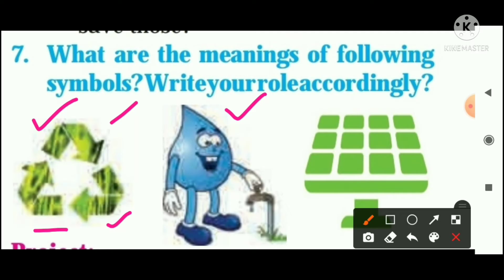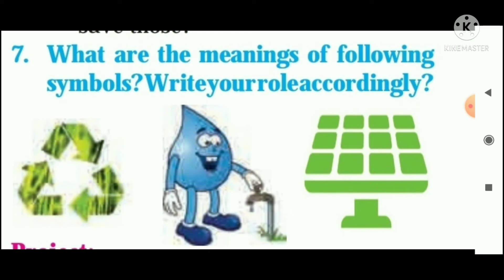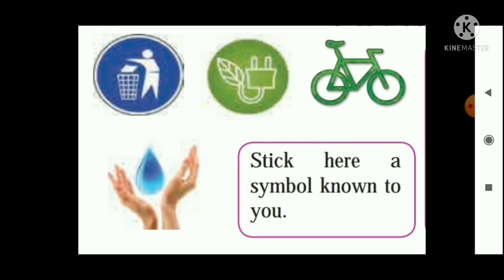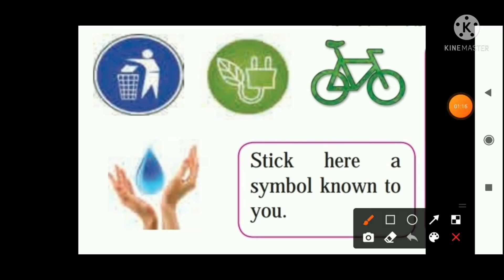The second symbol tells us about saving water, and the third symbol is about solar energy. Solar energy is a type of green energy. These are the symbols and their meanings. Then we learn about another three to four pictures.